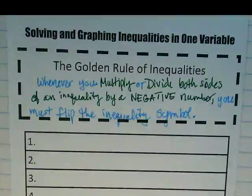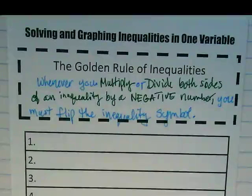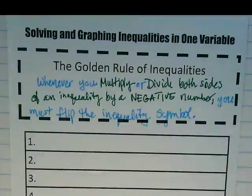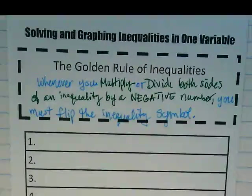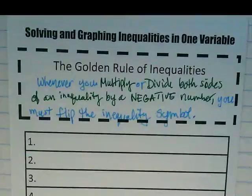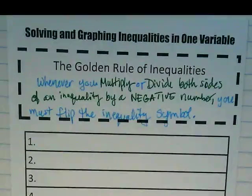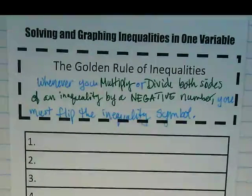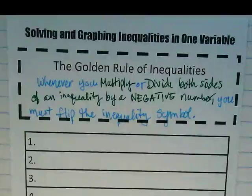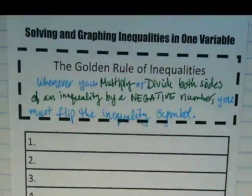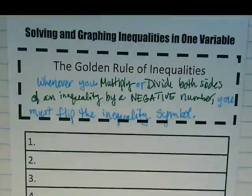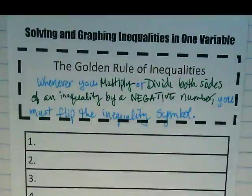So the full statement. Whenever you multiply or divide both sides of an inequality by a negative number, you must flip the inequality symbol. This is different from our flip-flop for order. This is a rule about when we're simplifying and trying to get the variable by itself, if we ever multiply or divide by a negative, the symbol flips. And we will explore together why. But today we're going to get the steps down.